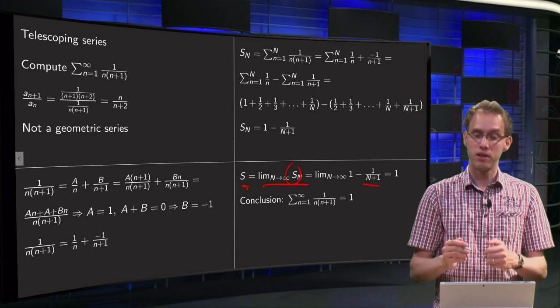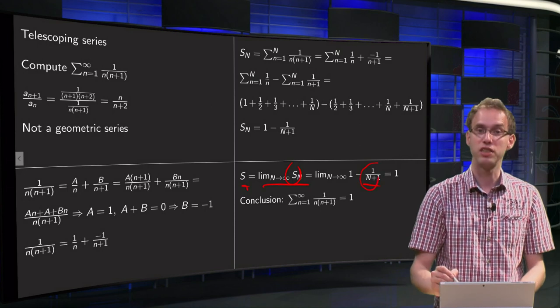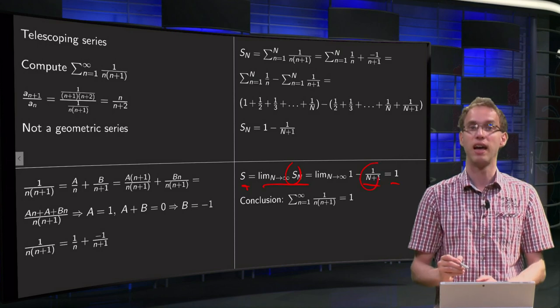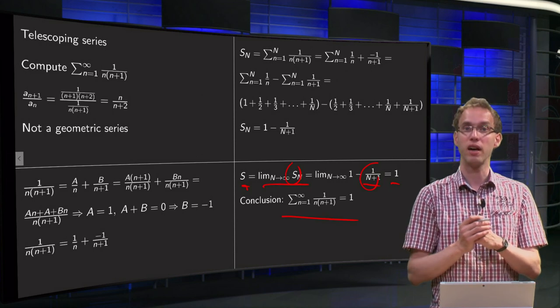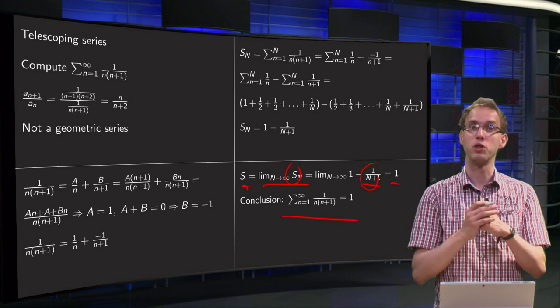Plug it in. The term over here vanishes if N goes to infinity, so we are left with 1. So the conclusion is the sum of our series 1 over n times n plus 1 equals 1.